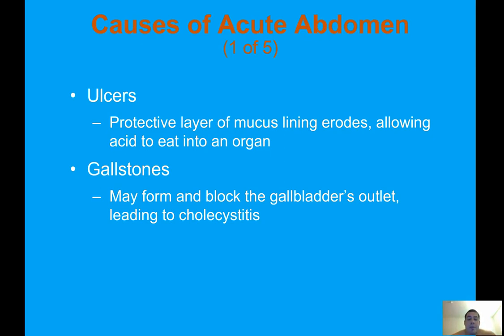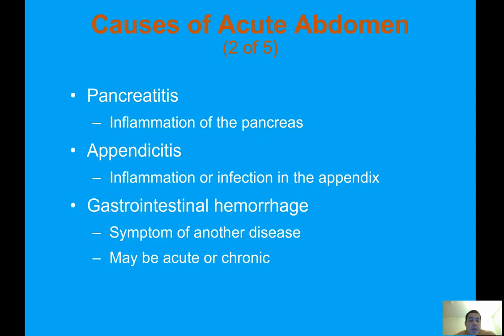Causes of acute abdomen: ulcers occur when the protective layer of mucus lining erodes, allowing acid to eat into an organ. Gallstones may form and block the gallbladder's outlet, leading to cholecystitis. Pancreatitis is inflammation of the pancreas. Appendicitis is inflammation or infection in the appendix — patients usually present with lower right quadrant pain.